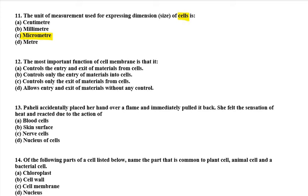Twelfth question: the most important function of the cell membrane is that it controls the entry and exit of materials from the cell; controls only entry; controls only exit; or allows entry and exit without any control. The right option is A — the cell membrane controls the entry and exit of materials. The plasma membrane is porous and regulates the inward and outward movement of substances in the cell.